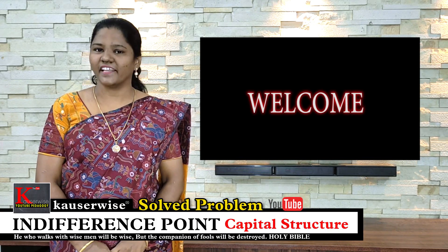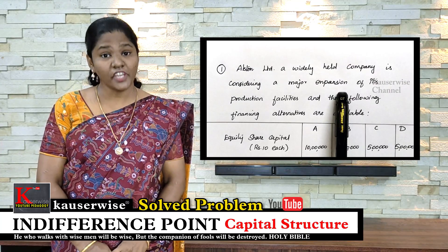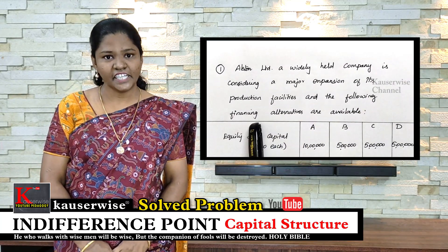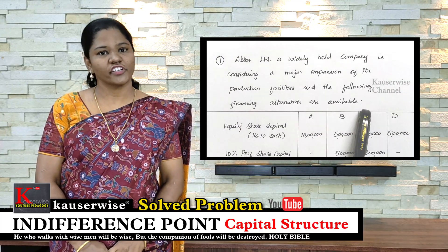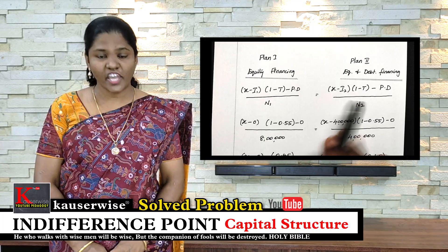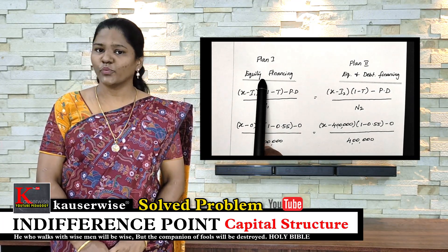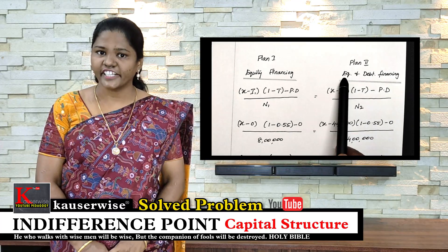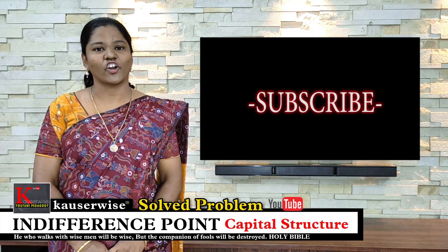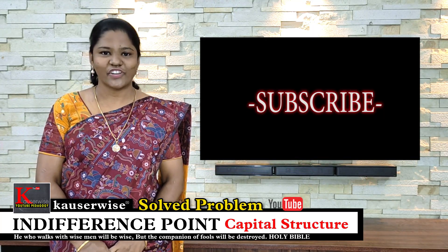Hi, welcome to Courserwise channel. This is the continuation video of capital structure. In the previous video, we have seen calculation of EPS — that is earnings per share — under four different alternatives. You can find the links in the description box. In this video, we are going to see calculation of indifference point. Please try to watch the complete video to get clarity about this topic. Now, let's get into the video.